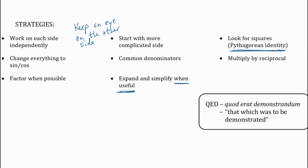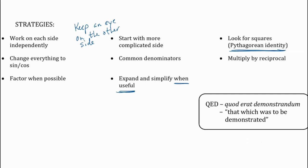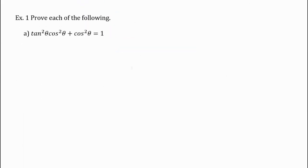QED stands for the Latin 'quod erat demonstrandum,' meaning 'that which was to be demonstrated.' It's a way of summarizing and saying: this is what I was supposed to show and I've done it. So it's a good way to sum up your proof.